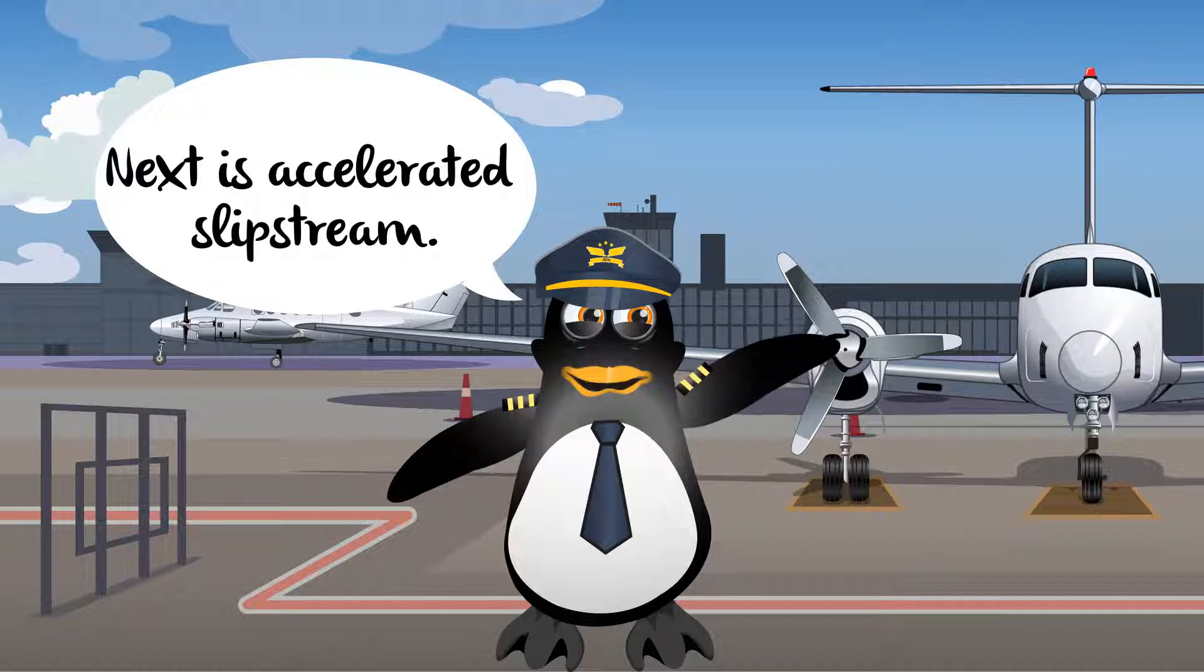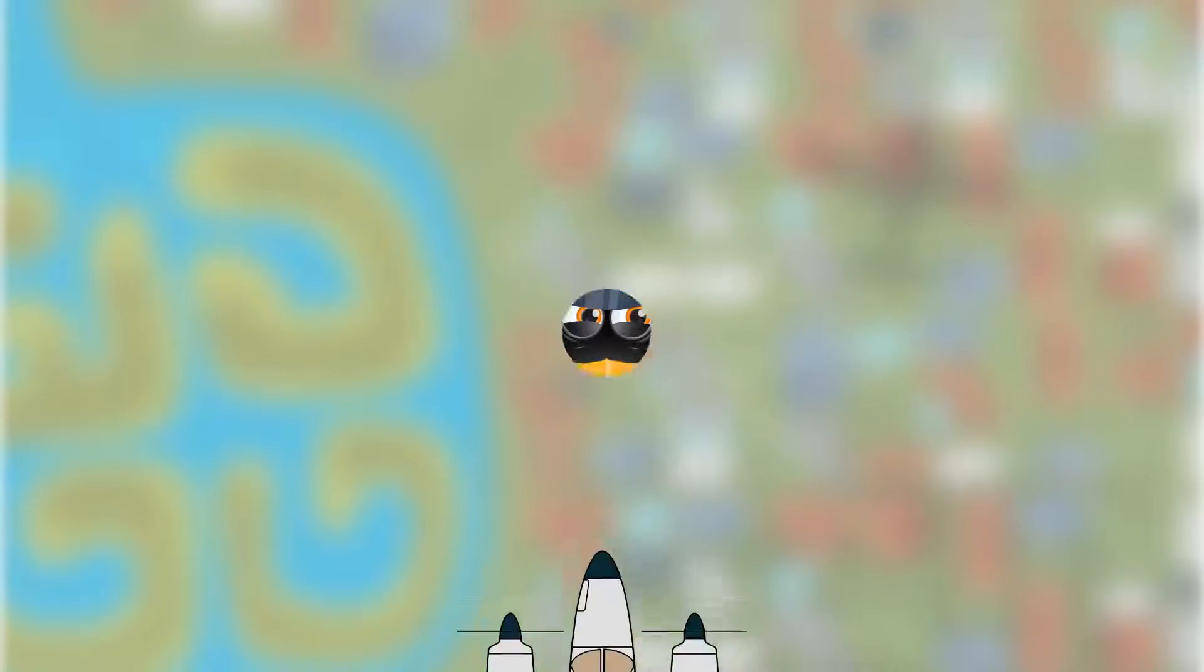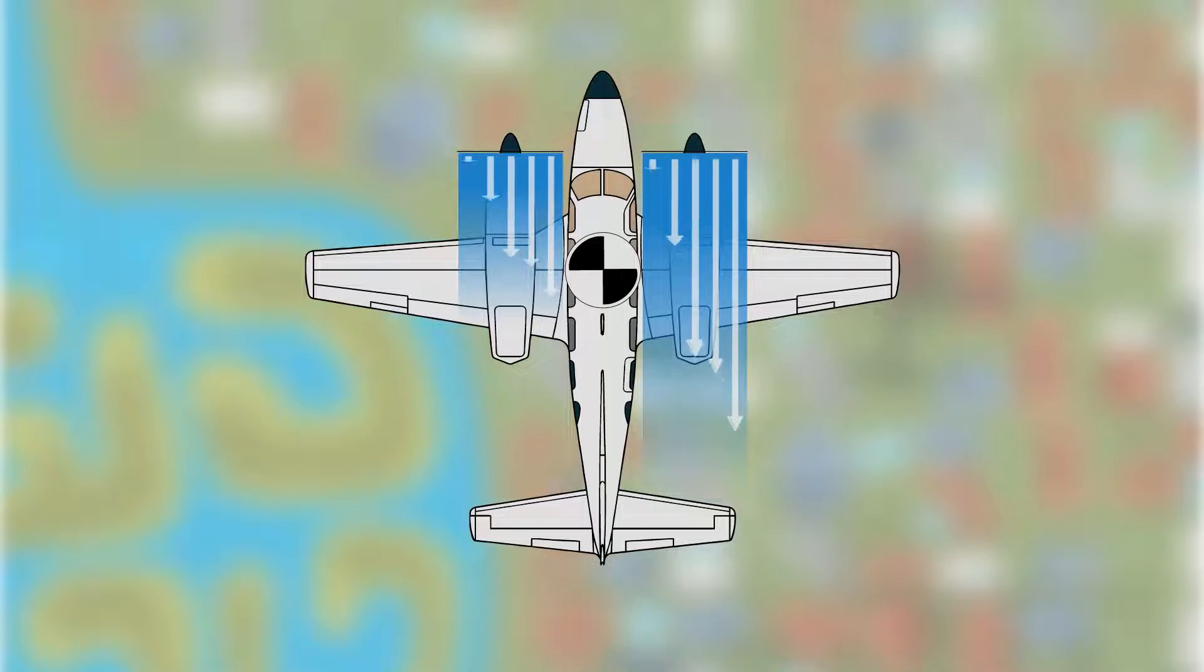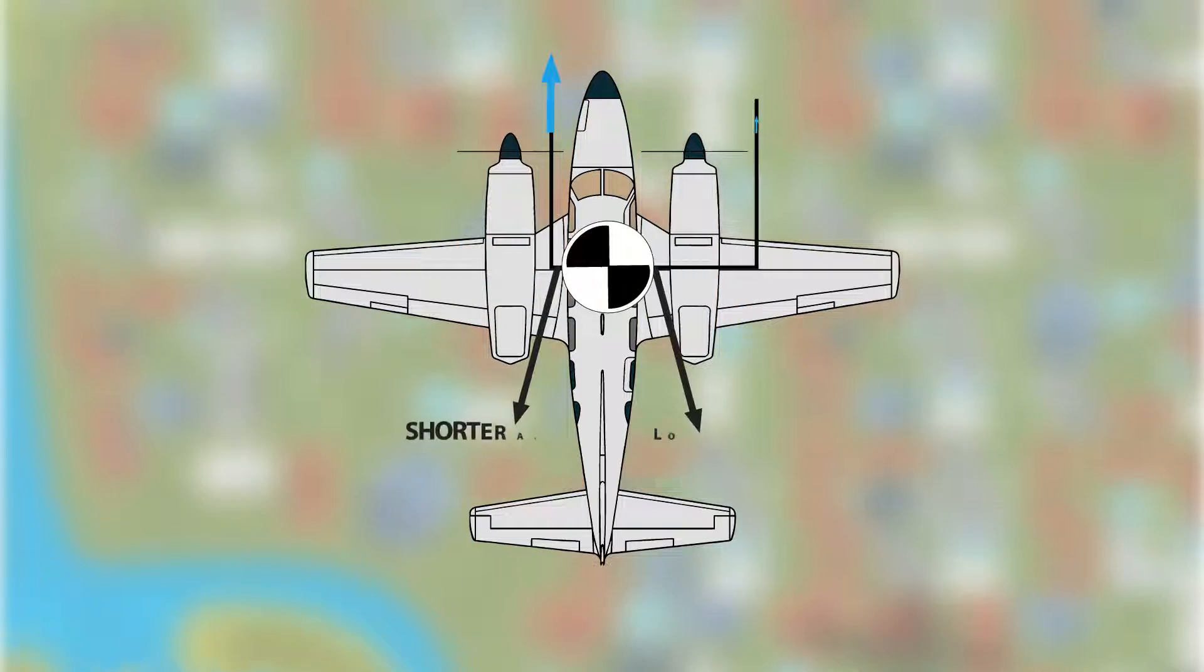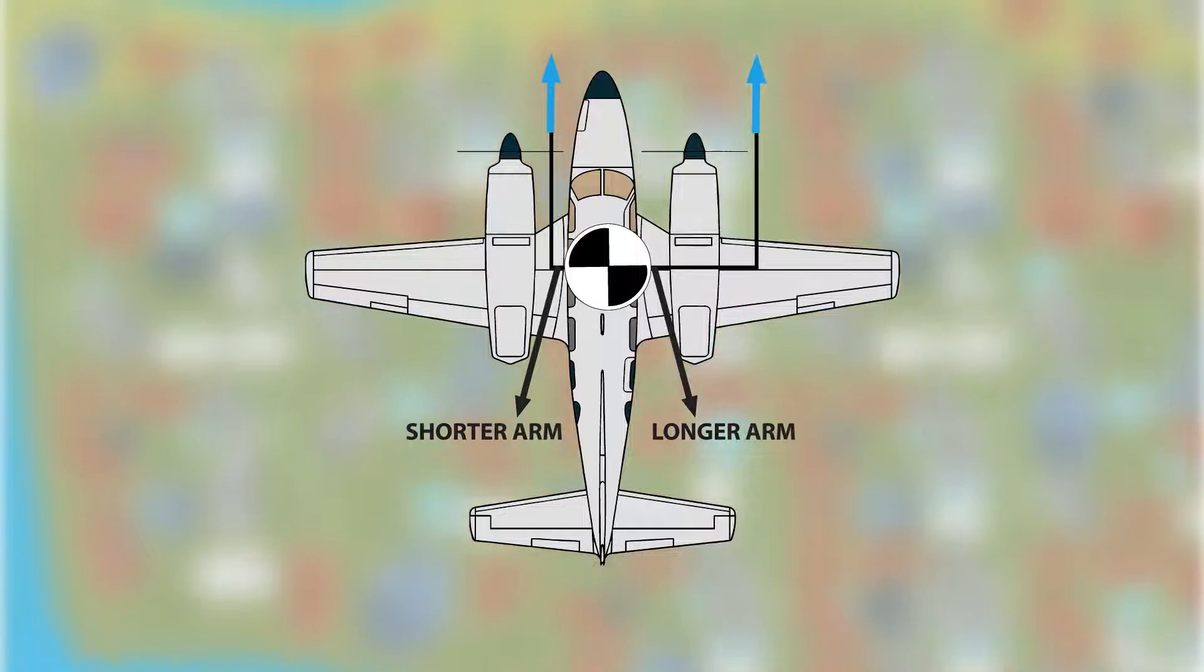Next is accelerated slipstream. Accelerated slipstream refers to the air moved by the propeller, which moves more quickly over the wing directly behind the propeller. Because of P-Factor, the right engine has a longer arm from the center of gravity compared to the left engine, creating more thrust from the descending blade.